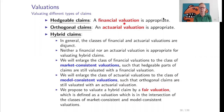For hedgeable claims, a financial valuation is appropriate. If the insurer charges the price of the hedge — the discounted expectation under an equivalent martingale measure Q — the insurer can buy the hedge and the complete risk is hedged. An actuarial valuation is appropriate for orthogonal claims, which are independent of the financial market. The best we can do is price by a best estimate plus a risk margin, setting aside capital to pay the claims with high probability.